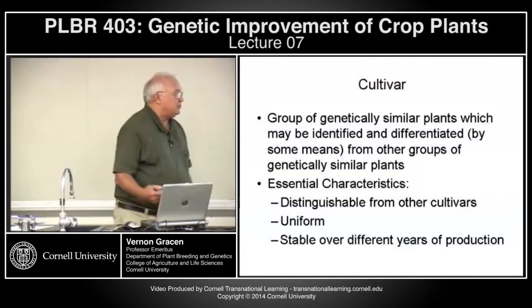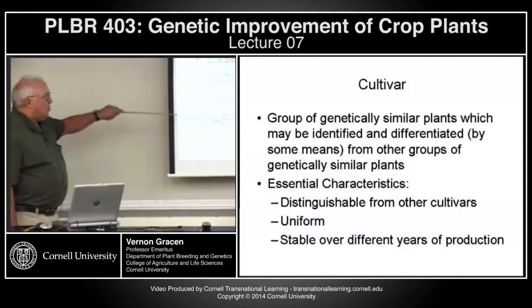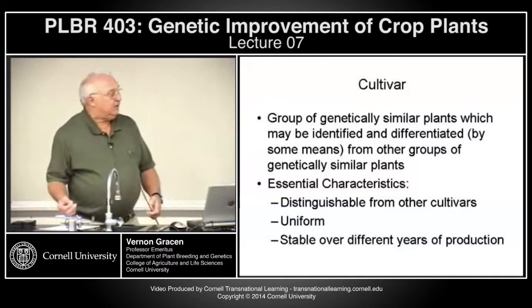Plants must also be stable over different years of production. In Europe, the system of UPOV for registering varieties goes through DUS — distinguishability, uniformity, and stability.